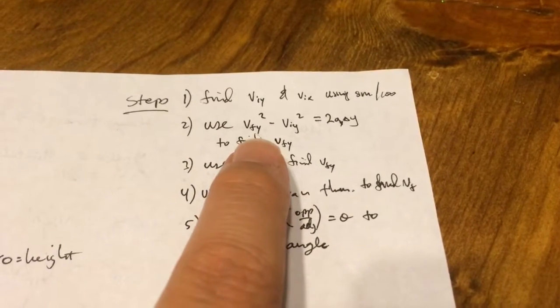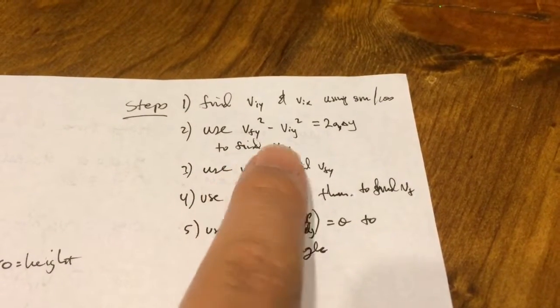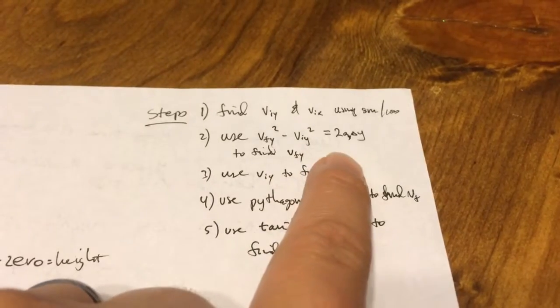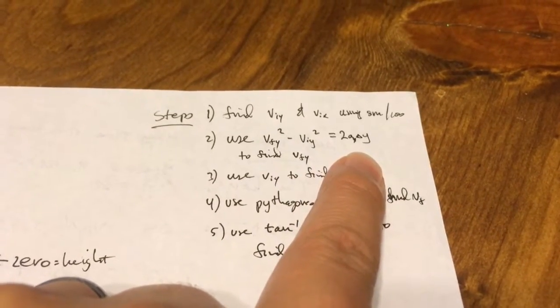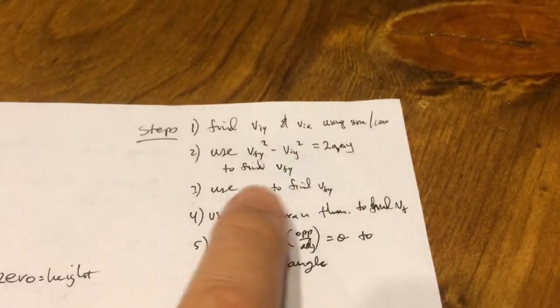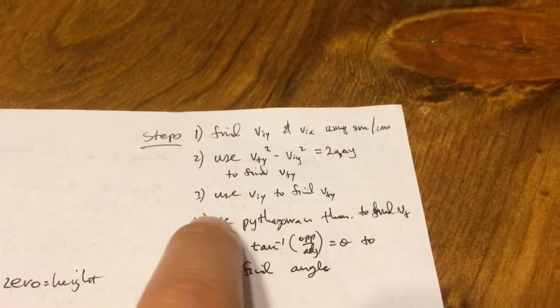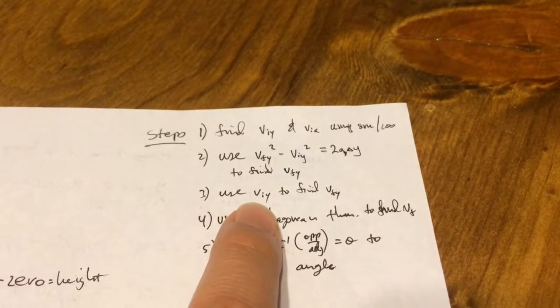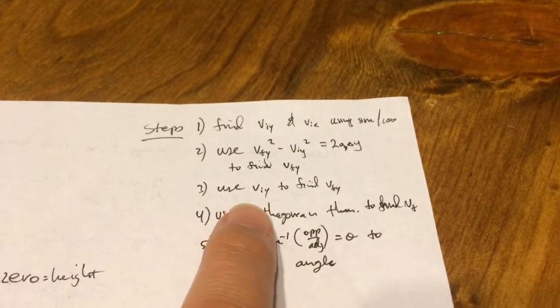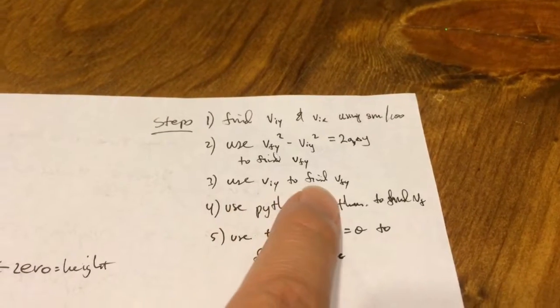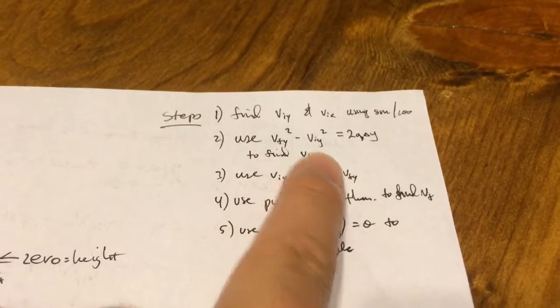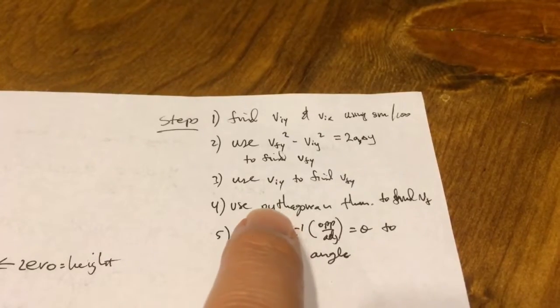All right, because we're looking for a v final, we know the initial, we know the acceleration, we know the change in height. So this equation works. We're going to use that to find v final in the y. And let's see, we use the initial in the y to find v final in the y with this equation. Oh sorry, that's wrong. This is what happens when you do this when you're sleeping.